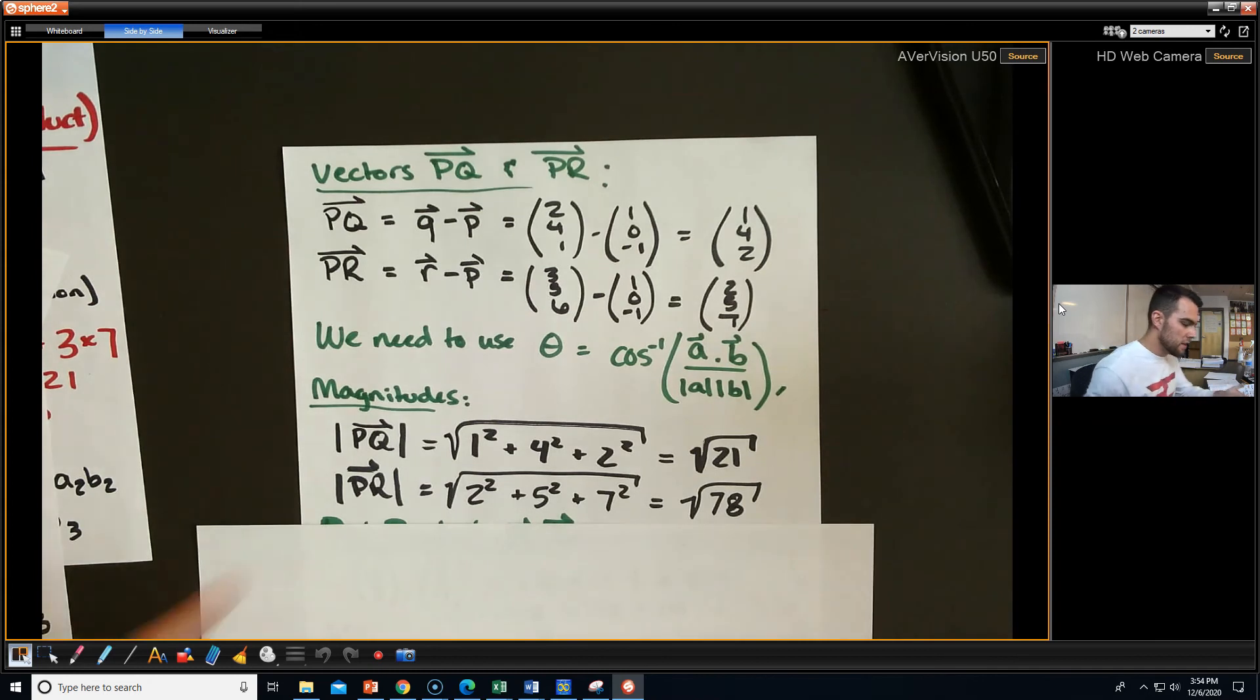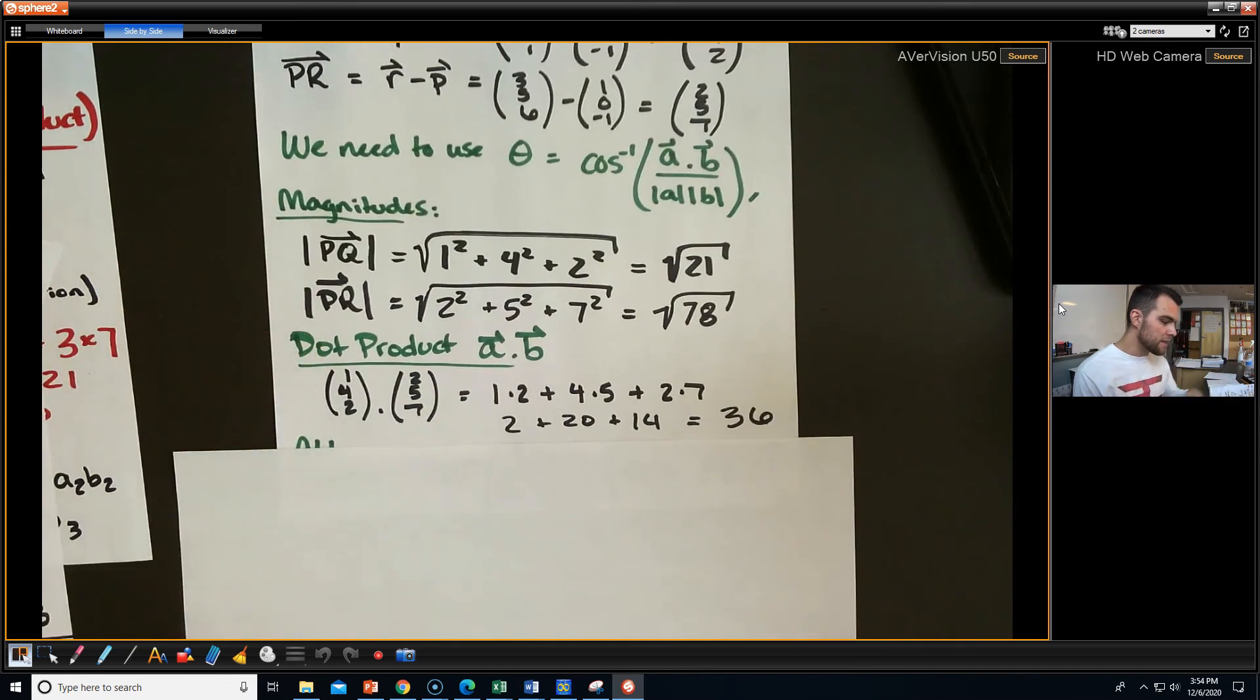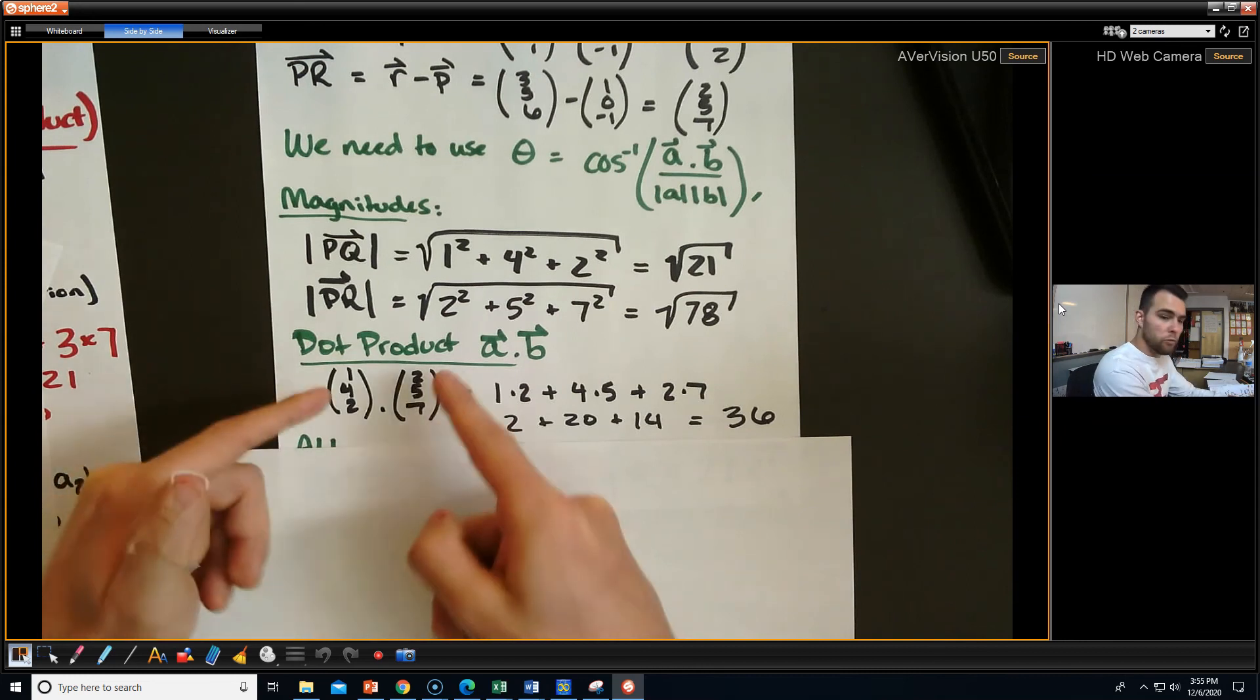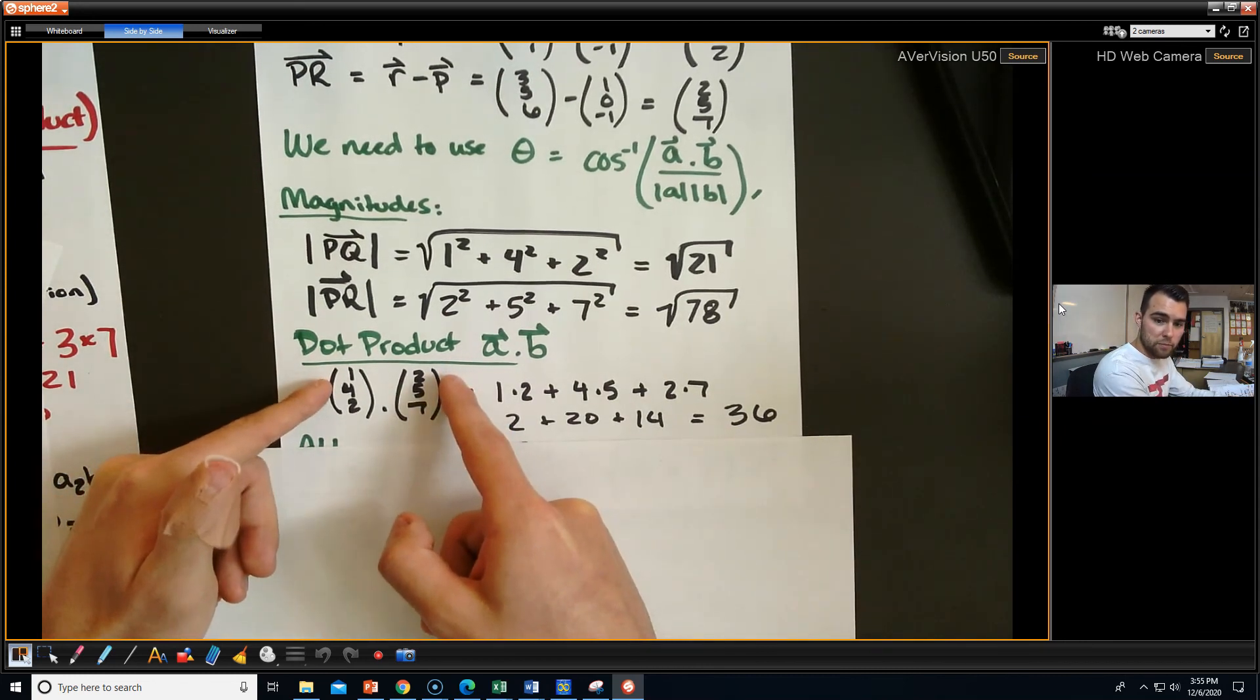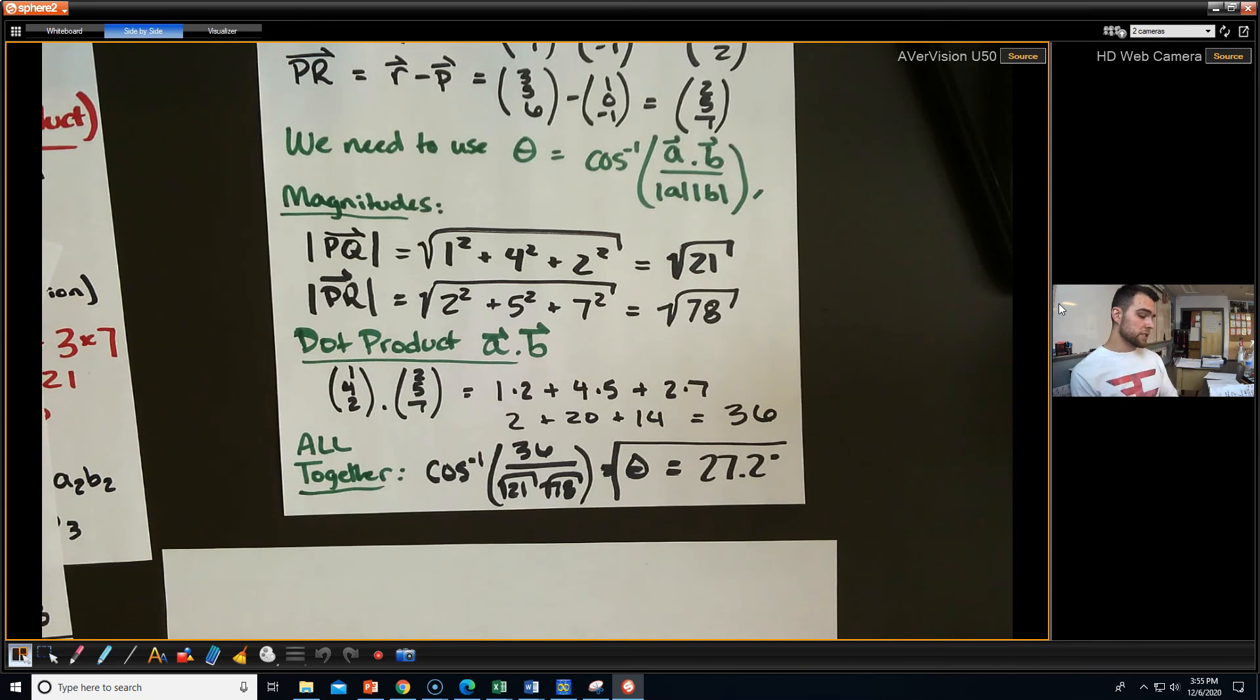The magnitudes, again, using Pythagoras' theorem, you just add up all the components, square them, add them together, and then take the square root. I got the square root of 21 and the square root of 78 for PQ and PR, respectively. I would leave them as square roots because decimals are gross and at least we have just one little value. Let's keep them as square roots for now. Using the dot product to actually find that top part of our equation, we're going to do the PQ vector times the PR vector. Again, 1 times 2 plus 4 times 5 plus 2 times 7. We end up getting 36 and putting it all together. The arc cosine of 36 over the square root of 21 times the square root of 78 will give us 27.2 degrees as our angle.